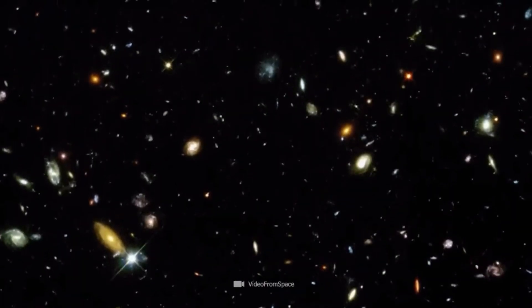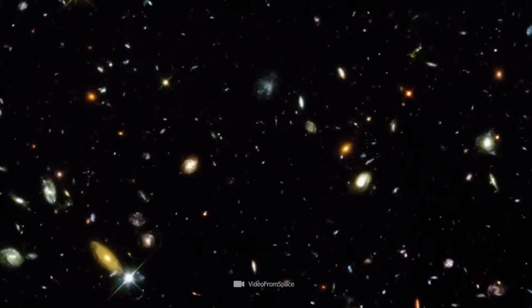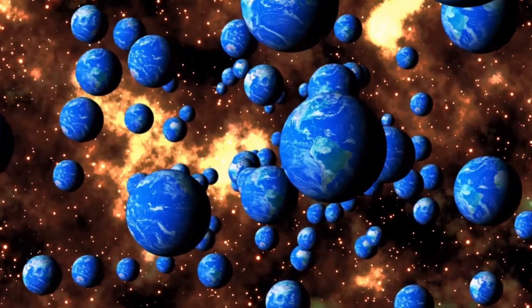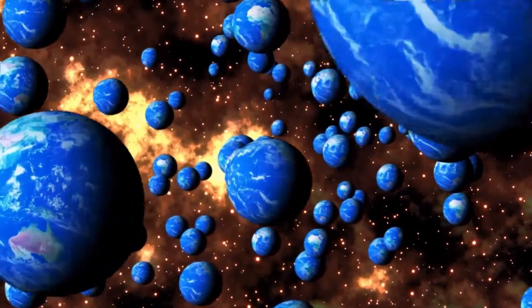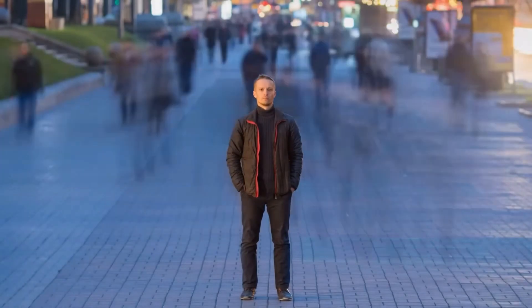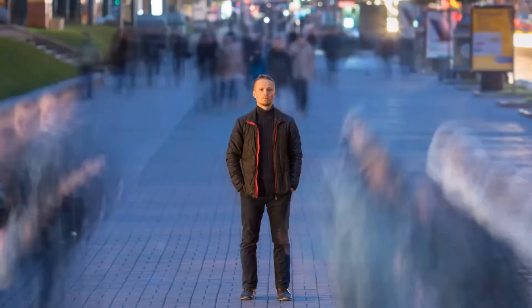Everett's many worlds theory states that every time a decision is made or a measurement takes place, the universe splits into different branches. Each branch represents a possible outcome or reality. This means that there are infinitely many parallel universes.